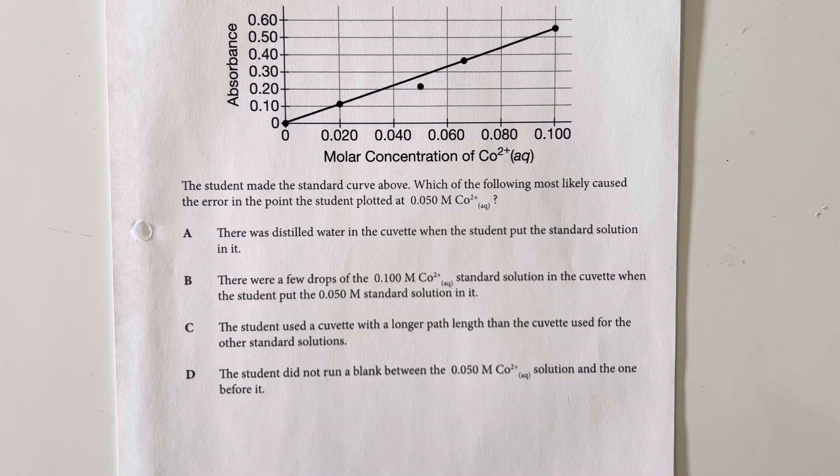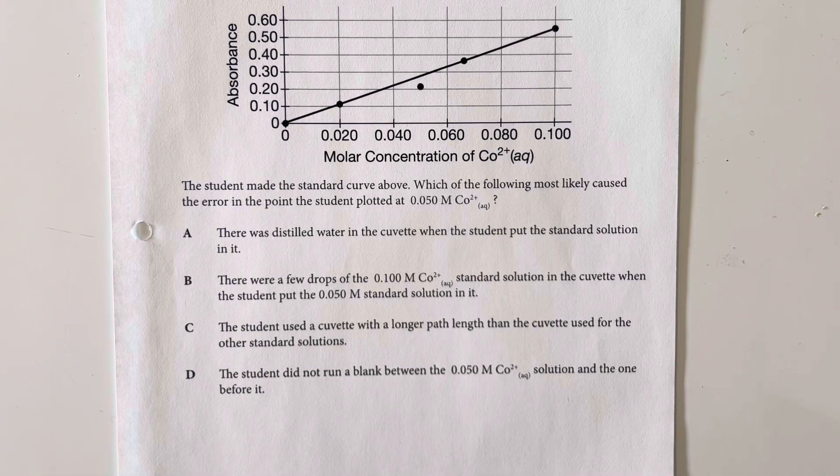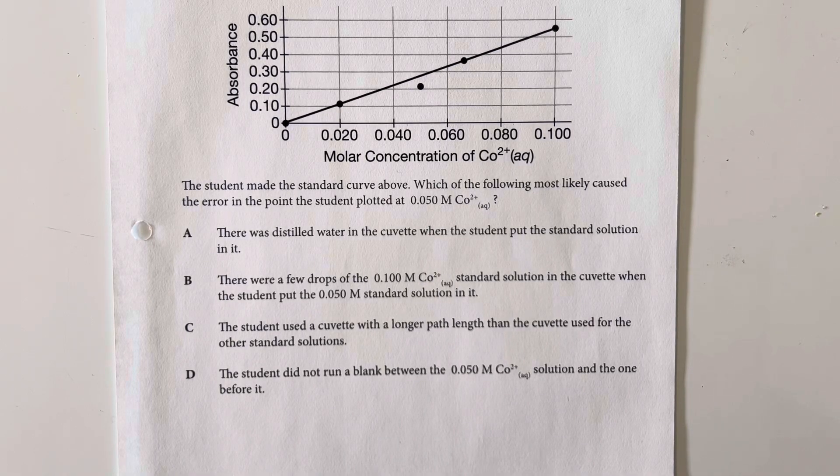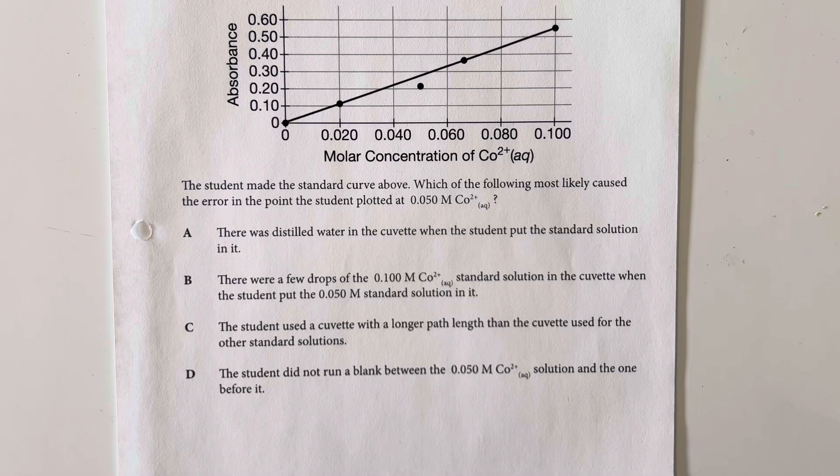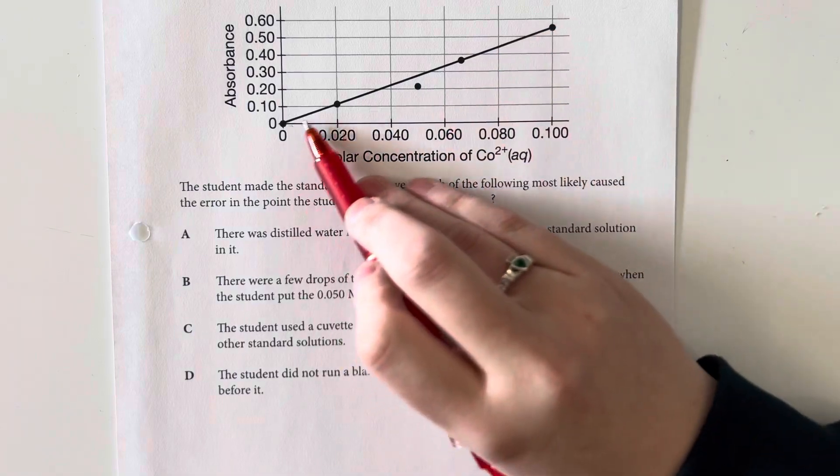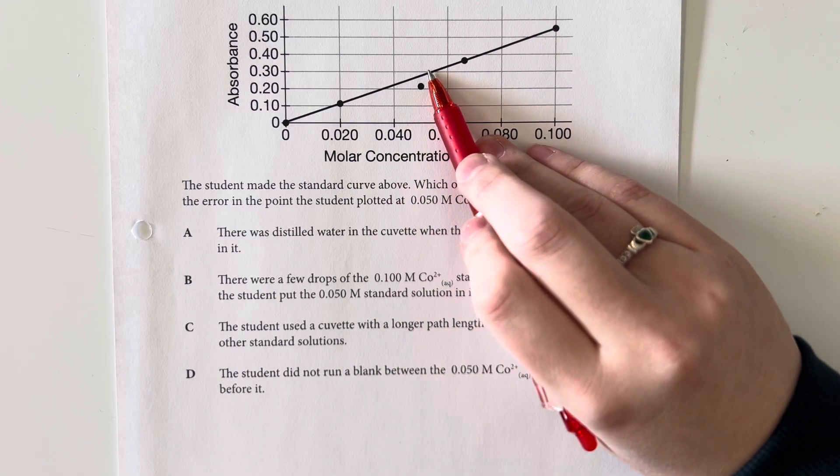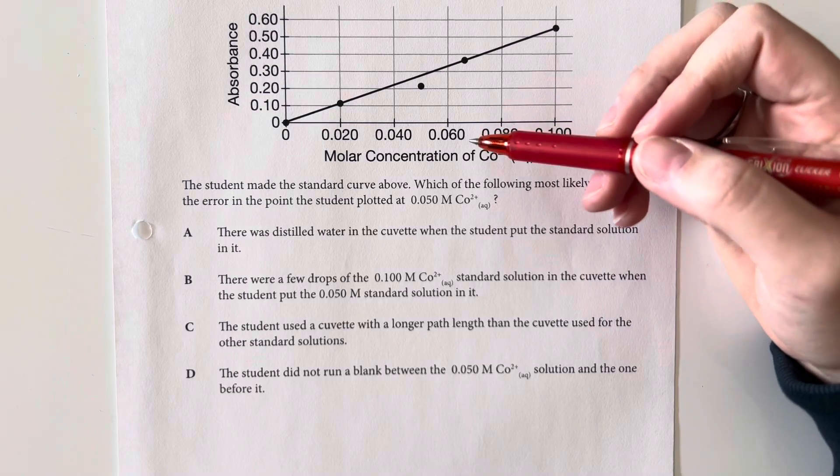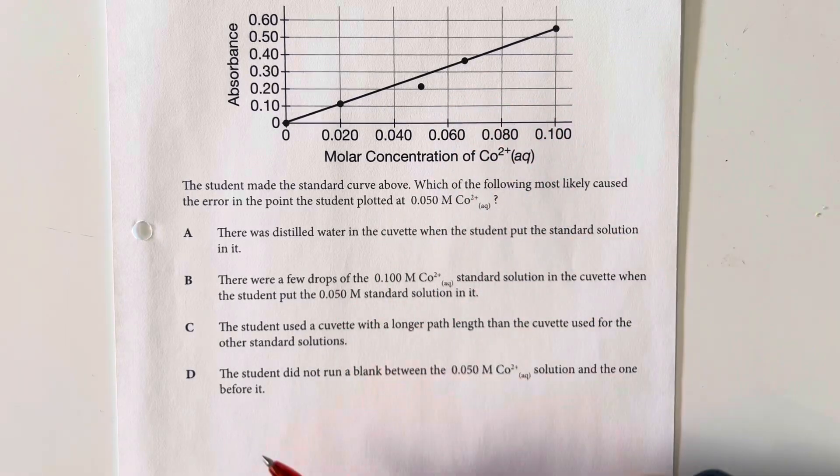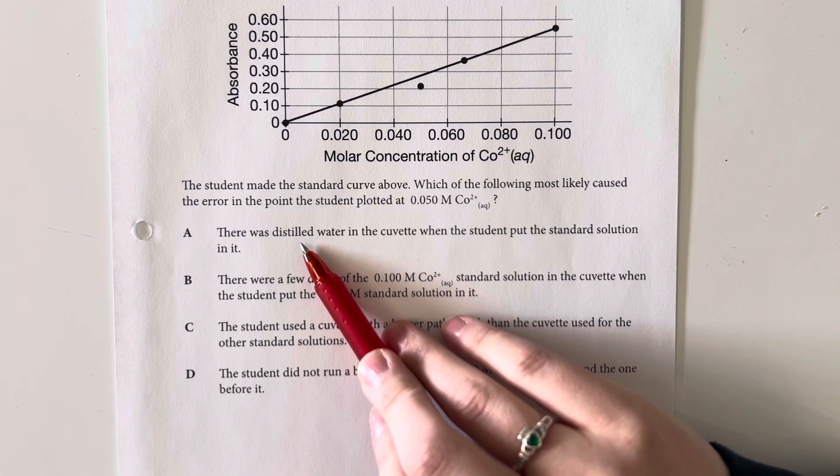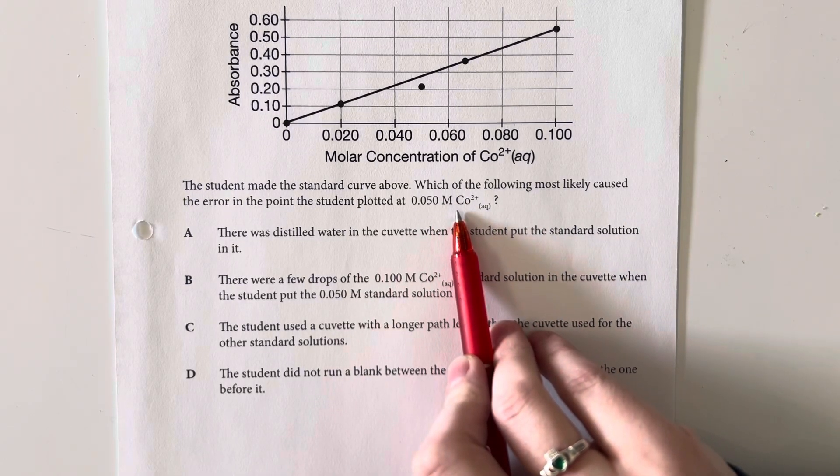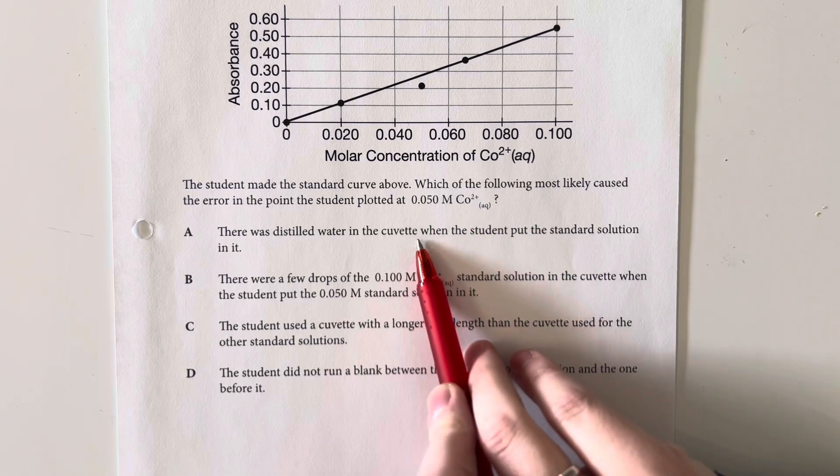The student made the standard curve above. Which of the following most likely caused the error point the student plotted for the 0.05 molar cobalt 2 chloride? So we are not quite as high of an absorbance as we should be. So that means that I am looking at something where I have less cobalt 2 than expected. So option choice A says that there was distilled water in the cuvette when the student put this standard solution in. This would lower the overall amount of cobalt that was present. So that looks good.